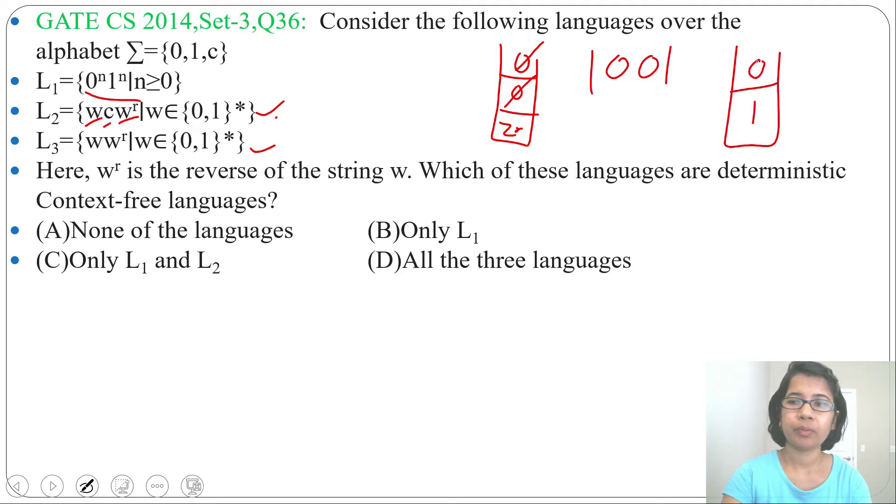Then for this 0 it should pop this 0. So how will it know that we are already in the middle, for next I need to pop? So it cannot identify, there will be more than one path.